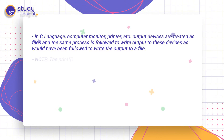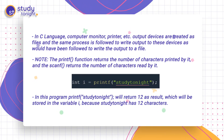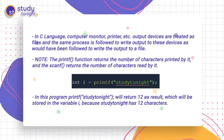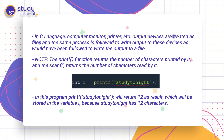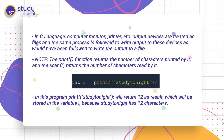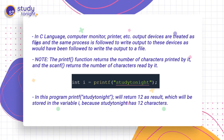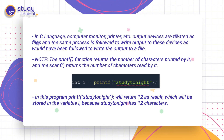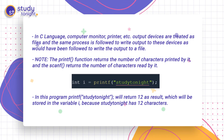In C language, the computer monitor, printer, etc. are output devices and are treated as files. The same process is followed to write output to these devices as would be followed to write output to a file. Note that the printf function returns the number of characters printed by it and scanf returns the number of characters read by it. For example, if printf prints 'Study Tonight', which has 12 characters, the return value stored in integer variable i will be 12.